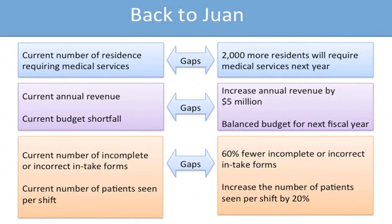We can look at this across our whole continuum of our results framework. Looking back at Juan's example, there were gaps at the community level where new residents are coming in that require medical services. There were also gaps at the organizational level — gaps between the current annual revenue and the desired annual revenue, and the budget shortfalls that come along with that. And then there were gaps at the level where Juan and his staff work: the number of incomplete or inaccurate forms and the number of current patients being seen within a given shift, as opposed to the desired levels. Each of those gaps represents a need, and each can be analyzed and solutions identified to address those needs going forward.